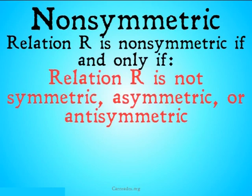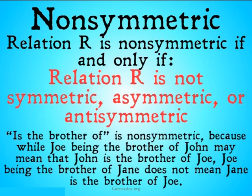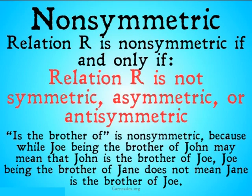Non-symmetric is another property of a relationship. Relation R is non-symmetric if and only if relation R is not symmetric, asymmetric, or antisymmetric. An example might be 'is the brother of,' which is going to be non-symmetric. While Joe being the brother of John may mean that John is the brother of Joe, Joe being the brother of Jane does not mean that Jane is the brother of Joe. It depends on something involved in the objects for the relation to be either symmetric or asymmetric. If we were only dealing with a population of all males, it would be symmetric, but without that restriction it's a non-symmetric relationship.